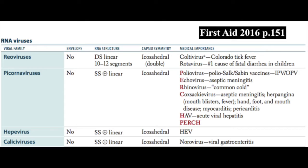The reoviruses have double-stranded linear RNA genomes — they're the only ones that have double-stranded RNA. They have icosahedral capsid symmetry and include reoviruses, which for medical importance are the Colorado tick fever viruses and rotavirus, which is the number one cause of fatal diarrhea in children in the world.